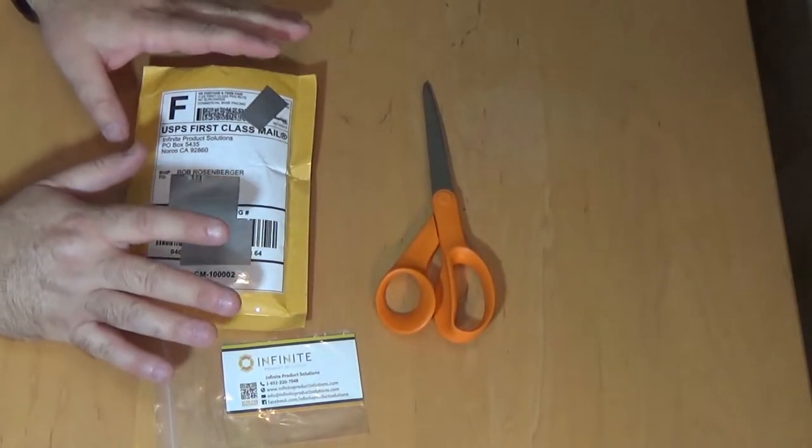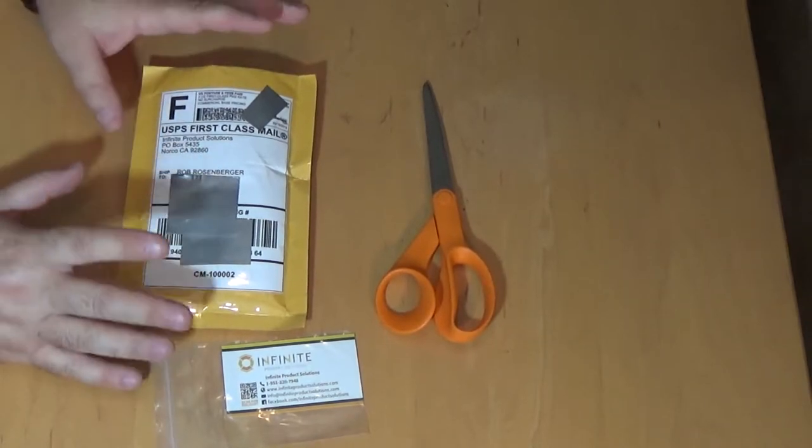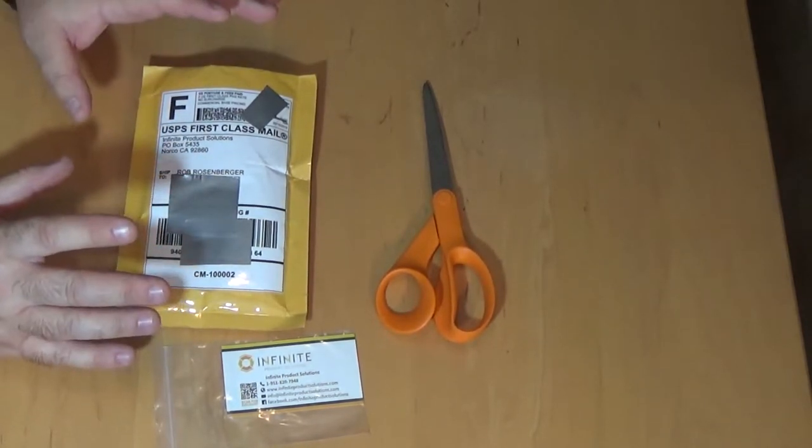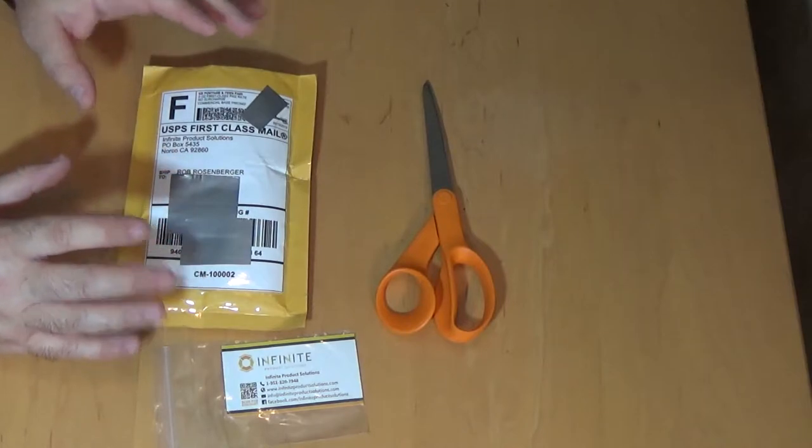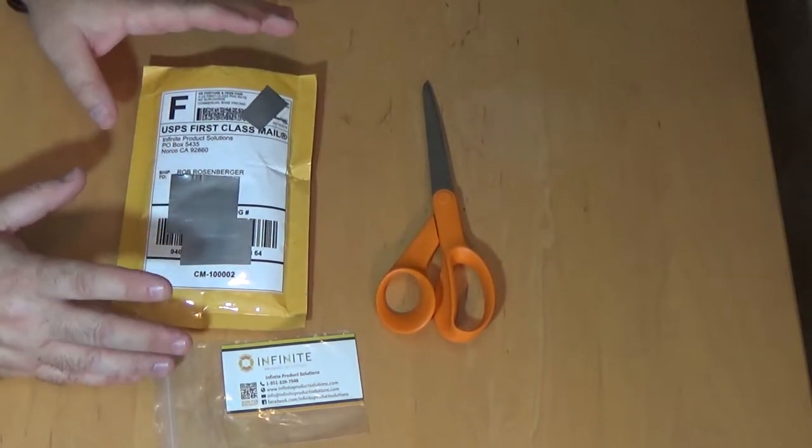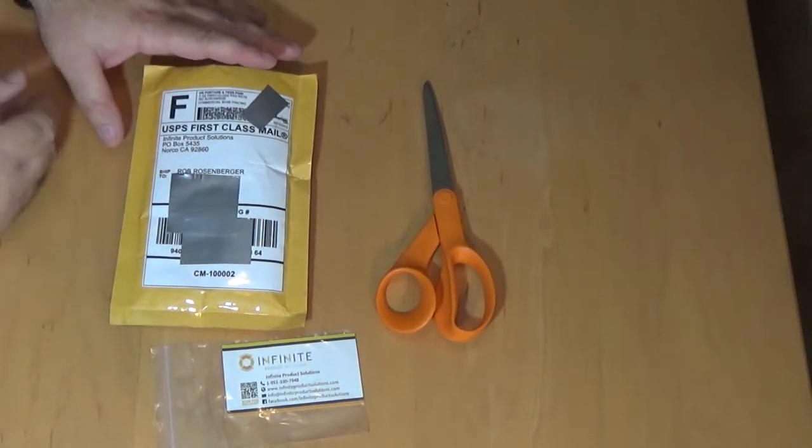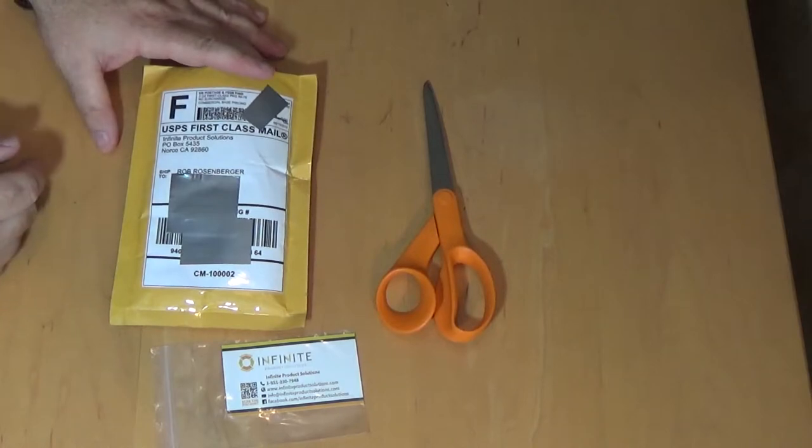OK, if I'm right, this package from Infinite Product Solutions contains not a prototype, but a custom-made thread adapter for a Smith & Wesson M&P15-22 rifle with a smooth barrel. If I'm wrong, then it contains something else, but whatever it is, it came from Infinite Product Solutions, and we're going to open this next on Mostly22LR.